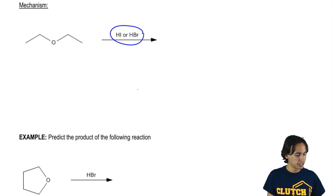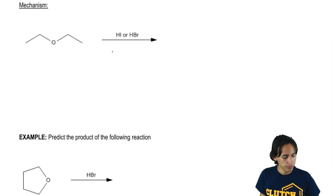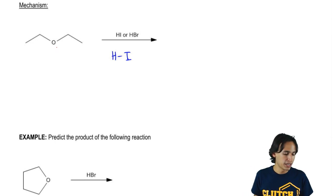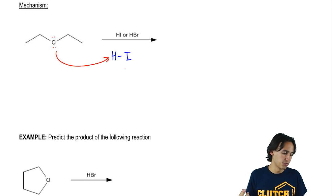So let me go ahead and show you guys this mechanism. Let's go ahead and work with HI since it's the strongest one. And basically what happens here is that the ether protonates. So what I wind up getting is that my oxygen and my carbon, that's a very strong bond. But what I can do is I can protonate it first.